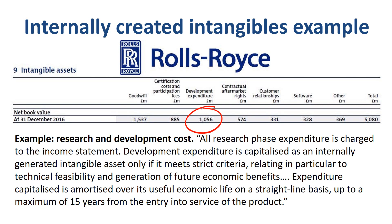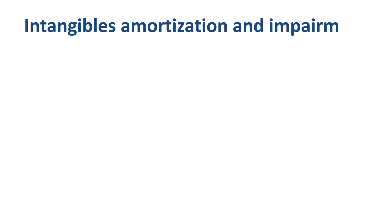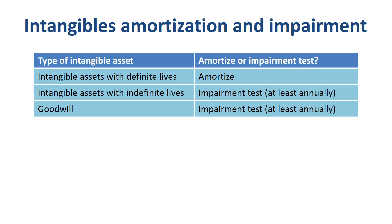That leads us into the topic of amortization. What is the difference between depreciation and amortization? The concept is the same, but depreciation and amortization are applied to different types of assets — you depreciate a tangible asset and amortize some of the intangible assets. Intangible assets with definite lives are amortized: debit amortization expense in the income statement, credit intangible asset accumulated amortization, a contra-asset account on the balance sheet. Intangible assets with indefinite lives are not amortized, but you test them for impairment. Same with goodwill — not amortized but tested for impairment.